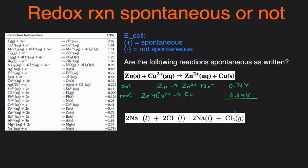Then we add the two voltage together, and we get the total voltage of 1.110 volts. And since this voltage is positive, it means this reaction is spontaneous. It's going to happen without outside help.